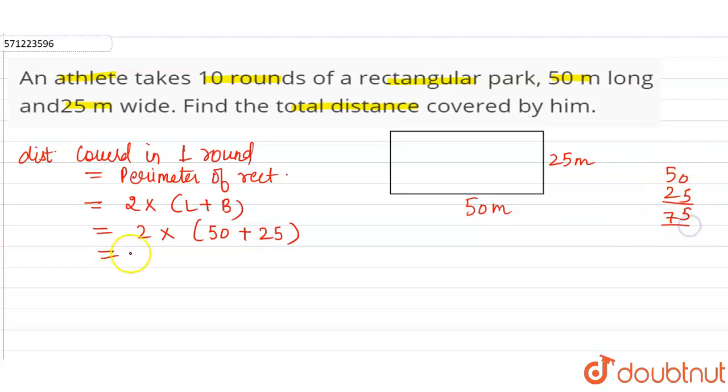So 2 into 75 meters. Now multiply 75 by 2, so 2 into 5, 10, 1 carry, 2 into 7, 14, 15. So distance covered by the athlete in one round is 150 meters.